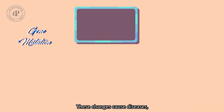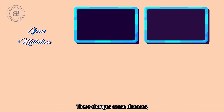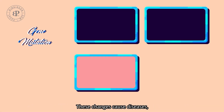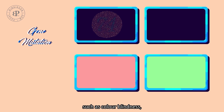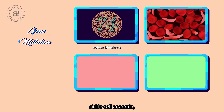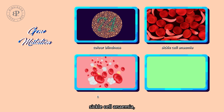These changes cause diseases such as colorblindness, sickle cell anemia, thalassemia, and hemophilia.